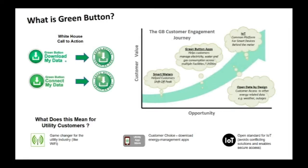Green Button can also be used for businesses — any business with a meter currently collecting information will be able to see that same information in Green Button format. Customers will also have a choice of energy management applications, whether on a smartphone, a computer, or any dedicated software appliance. This is another aspect of standardization, very much in line with the Internet of Things, ensuring one platform regardless of how many different utilities or third-party companies are using it.